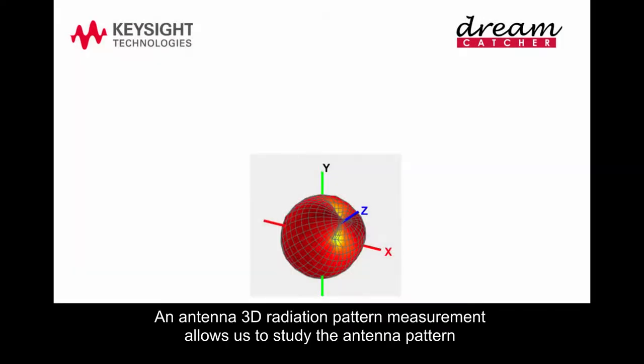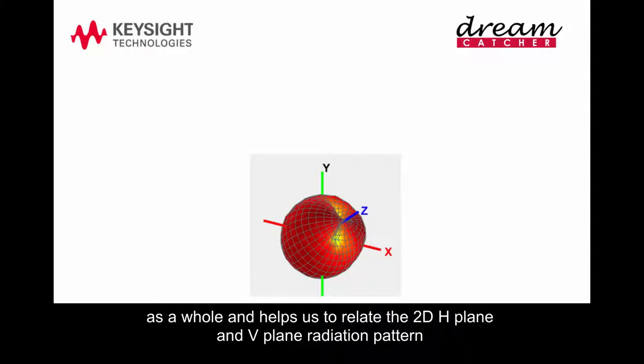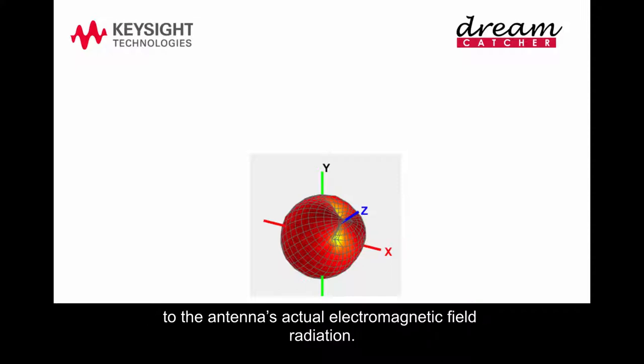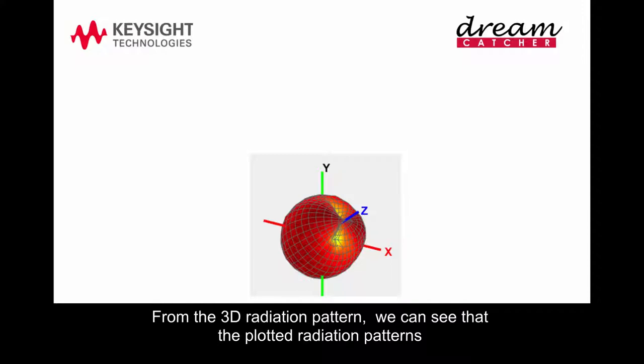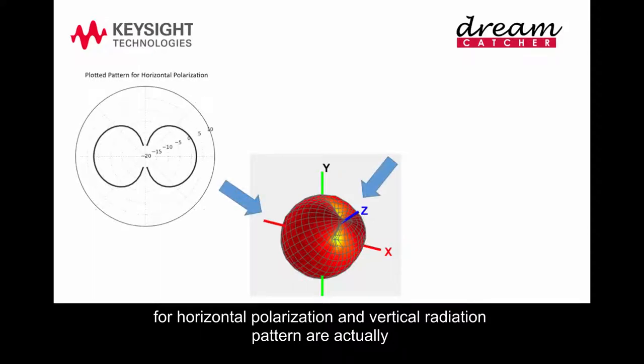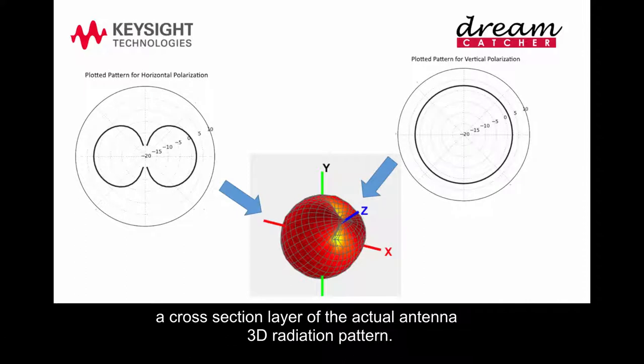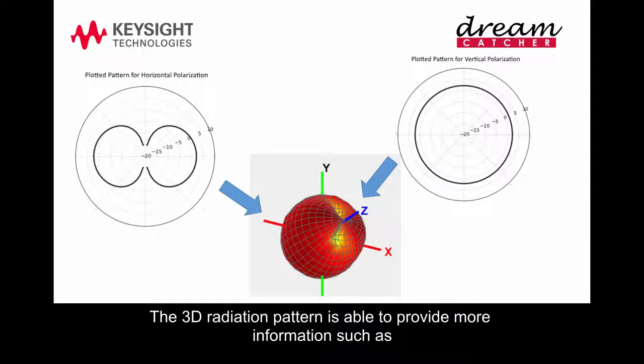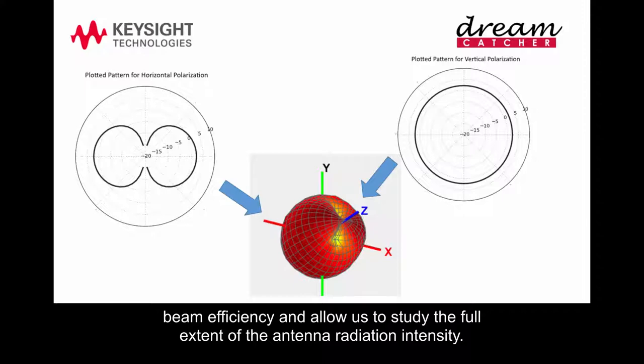An antenna 3D radiation pattern measurement allows us to study the antenna pattern as a whole, and helps us to relate the 2D H-plane and V-plane radiation pattern to the antenna's actual electromagnetic field radiation. From the 3D radiation pattern, we can see that the plotted radiation patterns for horizontal polarization and vertical radiation pattern are actually a cross section layer of the actual antenna 3D radiation pattern. The 3D radiation pattern is able to provide more information such as beam efficiency, and allows us to study the full extent of the antenna radiation intensity.